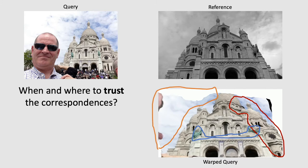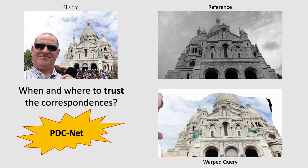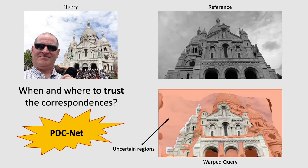We address this question by proposing a probabilistic dense correspondence network. Together with the flow field, we infer a confidence map according to which the red regions are uncertain. You can see that those uncertain regions correspond to the occluded, the ill-defined, and the inaccurate matching regions.